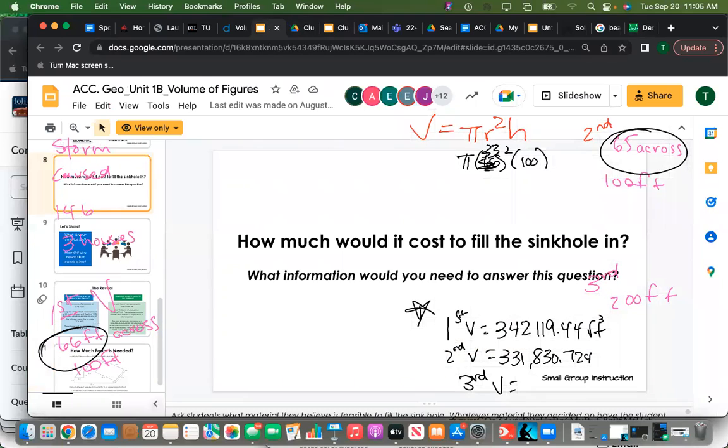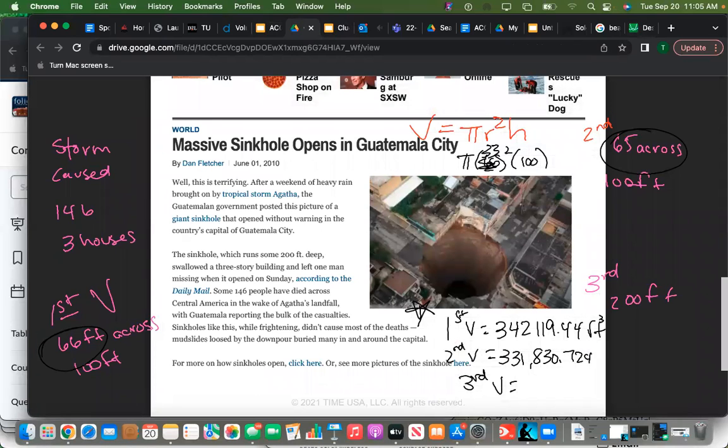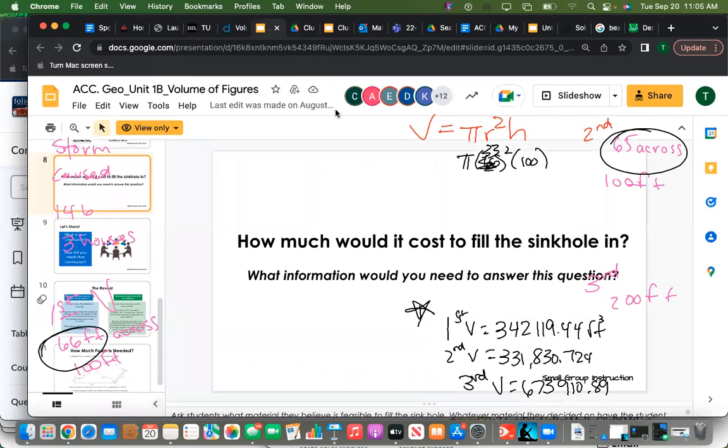Coming back in here, what did you all get for the last one? Go ahead. 673,910.89. So my question is, which one do we go with? Because I think our...